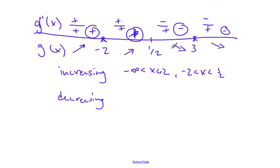For decreasing, I can write this as x > 1/2 but x ≠ 3. That will include both intervals.